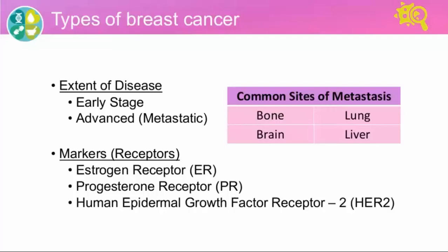This webinar is focusing on advanced or metastatic breast cancer. Within the category of metastatic breast cancer, another important factor is what parts of the body are involved. Common sites of metastasis include the bones, the lungs, the liver, lymph nodes, and brain. When breast cancer spreads to another part of the body, it's still breast cancer — for example, breast cancer spread to the lungs is breast cancer and not lung cancer.